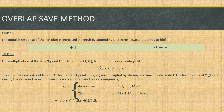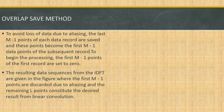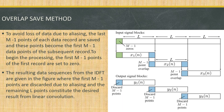The first M-1 points of Y(k) are corrupted due to aliasing and must be discarded. The last L points are taken into consideration and are the same as the result obtained using linear convolution. To avoid the loss of data due to aliasing, the last M-1 points of each data record are saved and become the first M-1 points of the next record. When processing begins, the first M-1 points of the first record are set to zero.